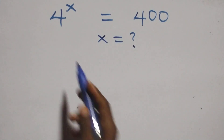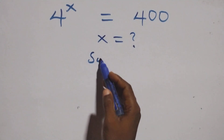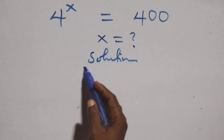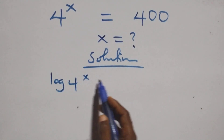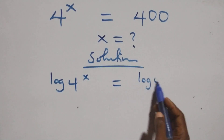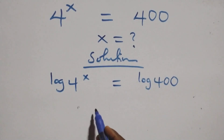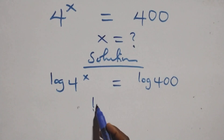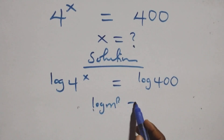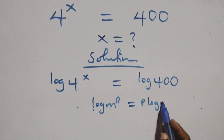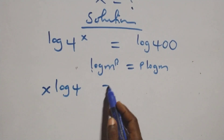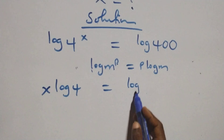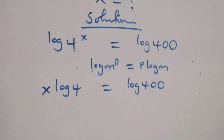Hello, you are welcome. Here we solve this equation. We take the log on both sides, so we have log of 4 raised to power x equals log of 400 on this side. The next step: apply the power of logarithm — when we have log m raised to power p, this is the same thing as p log m. So all we have becomes x log 4 equals log 400.